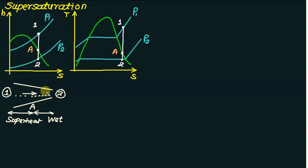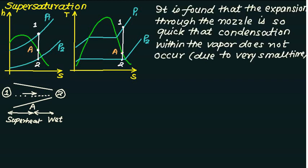But practically speaking, the length of the nozzle is very small and the velocity of steam is very high. So there is very little time in which we expect the phase change to occur — this is practically not possible, because for phase change we must allow certain time. Therefore, the steam will continue to behave as dry and saturated up to a certain point. That region is called the metastable region, or supersaturation region.